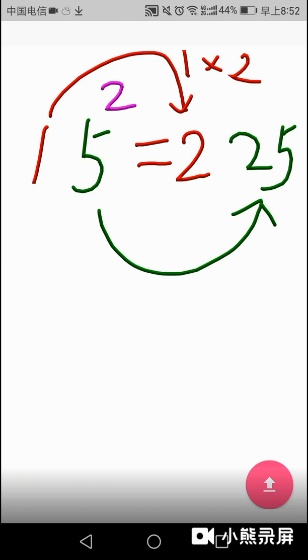First, we see the simplest example, the square of 15. We can divide the result into two parts, the left part and the right part. The right part must be equal to 25.